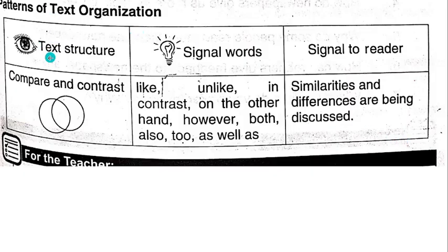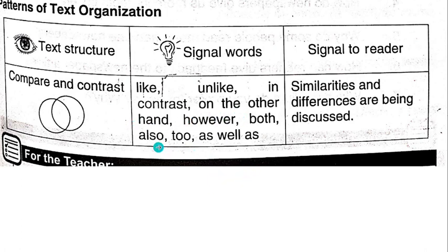Patterns of Text Organization. Text Structure Signal Words — Signal to Reader. Text Structure: Compare and Contrast. Signal words include: For Example, Like, Unlike, On the other hand, However, Both, Also, Two, As well. Signal to Reader: Similarities and differences are being discussed.